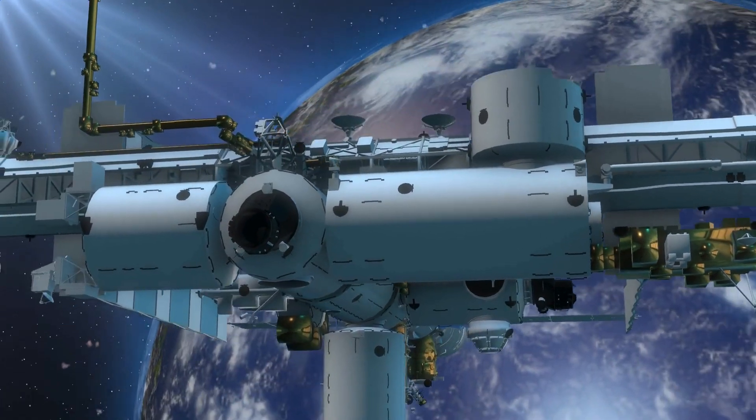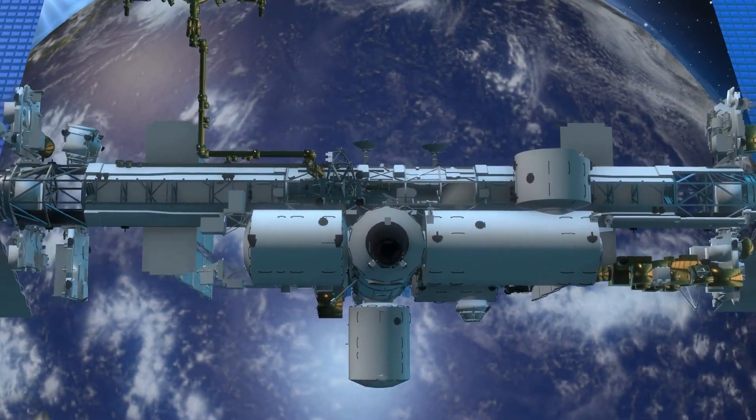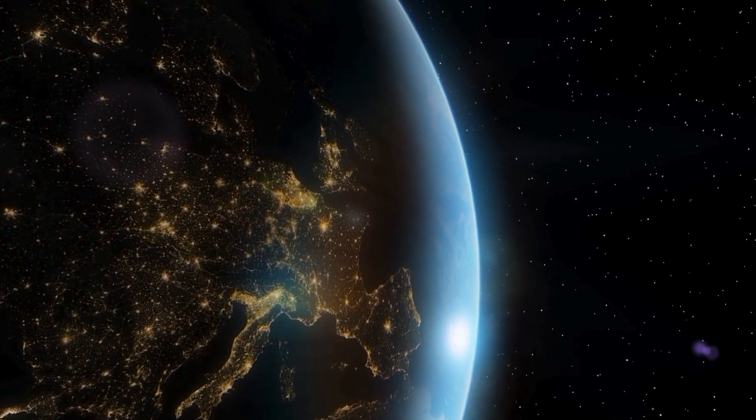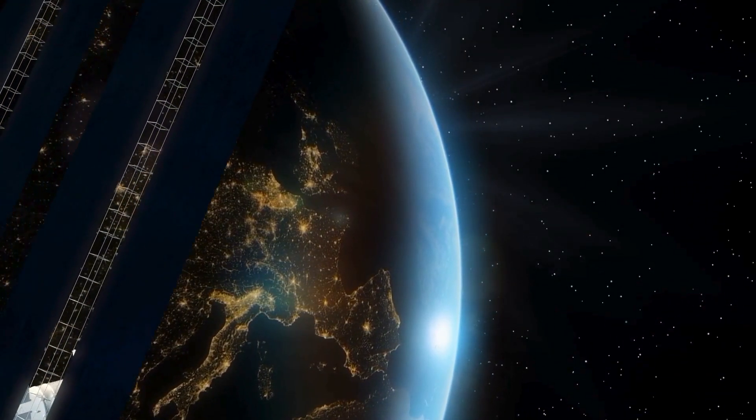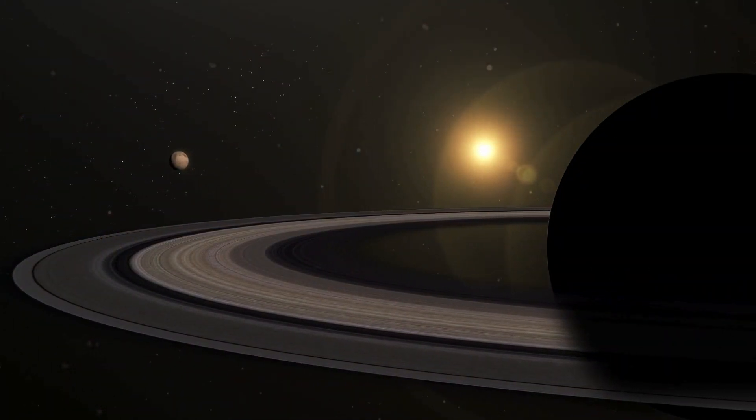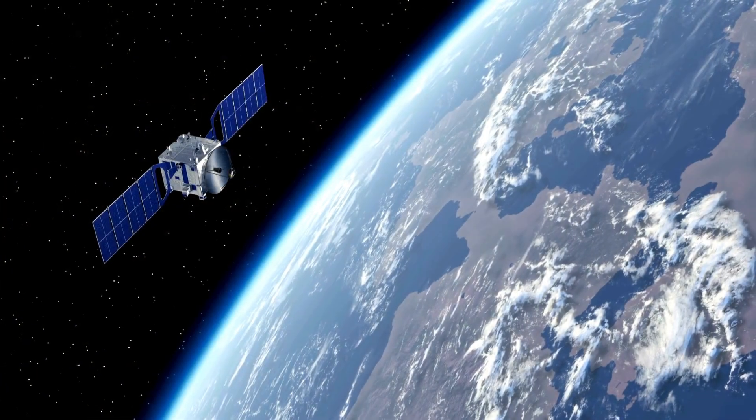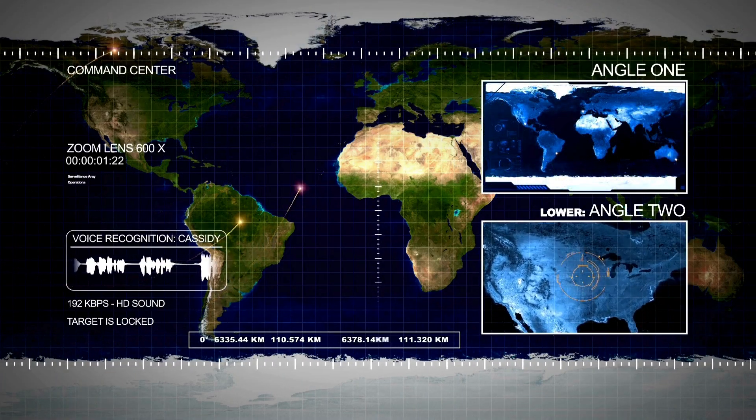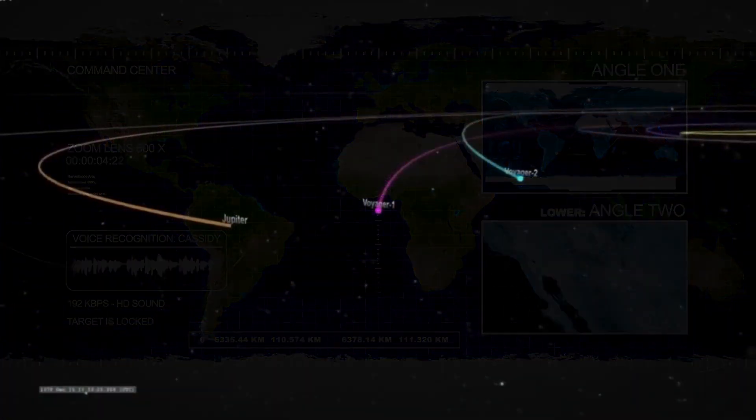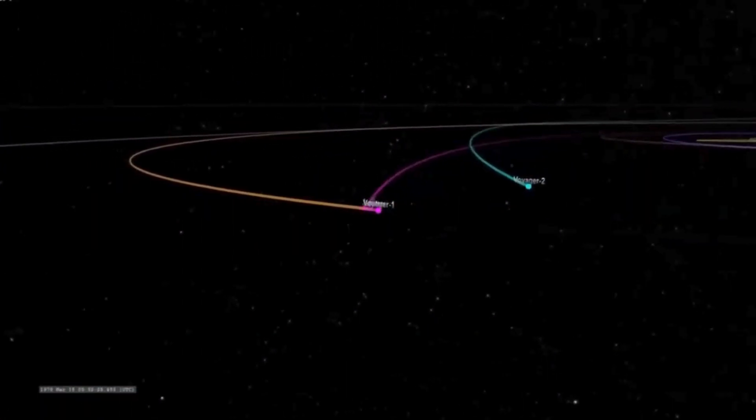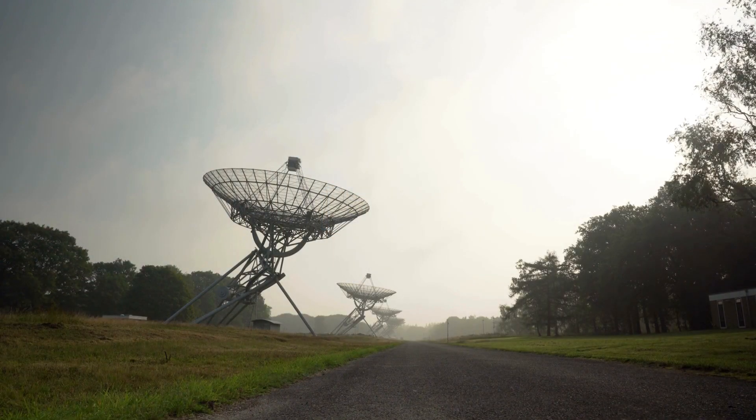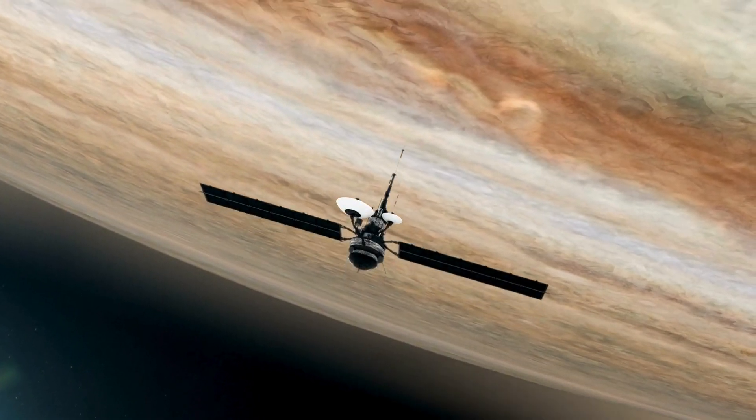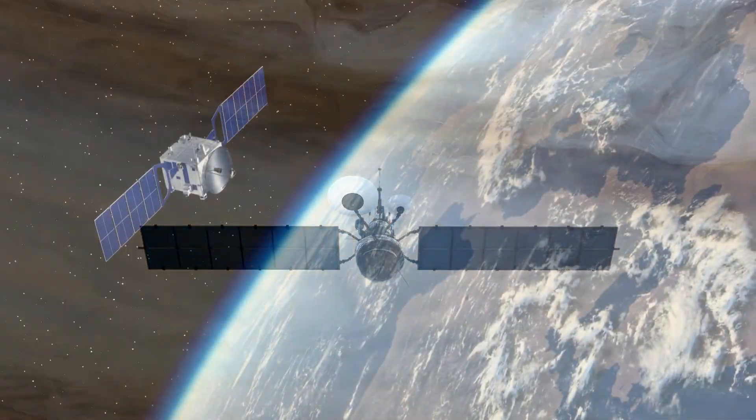NASA's Voyager One spacecraft has entered a new region at the far reaches of our solar system that scientists feel is the final area the spacecraft has to cross before reaching interstellar space. Scientists refer to this new region as a magnetic highway for charged particles because our sun's magnetic field lines are connected to interstellar magnetic field lines. This connection allows lower energy charged particles that originate from inside our heliosphere, or the bubble of charged particles the sun blows around itself, to zoom out and allows higher energy particles from outside to stream in.